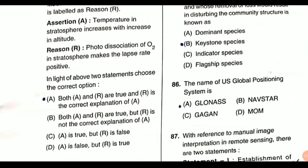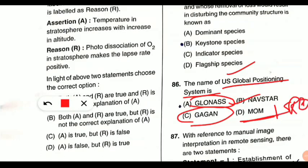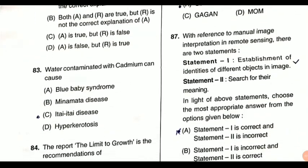Question 86, from remote sensing and GIS: the name of the U.S. global positioning system is called NAVSTAR. You should also know that GLONASS is from Russia, GAGAN is from India, and MOM — which stands for Mars Orbiter Mission — is also from India, by ISRO. These four things you should remember.